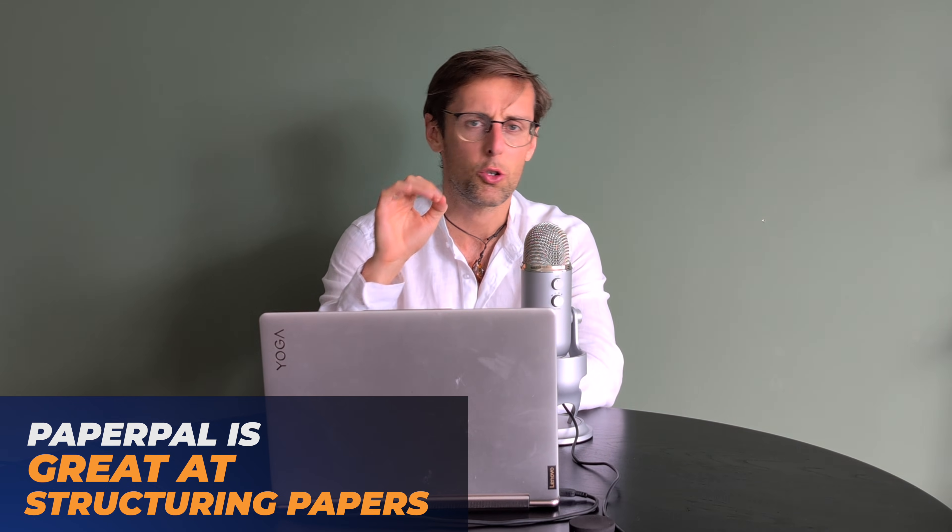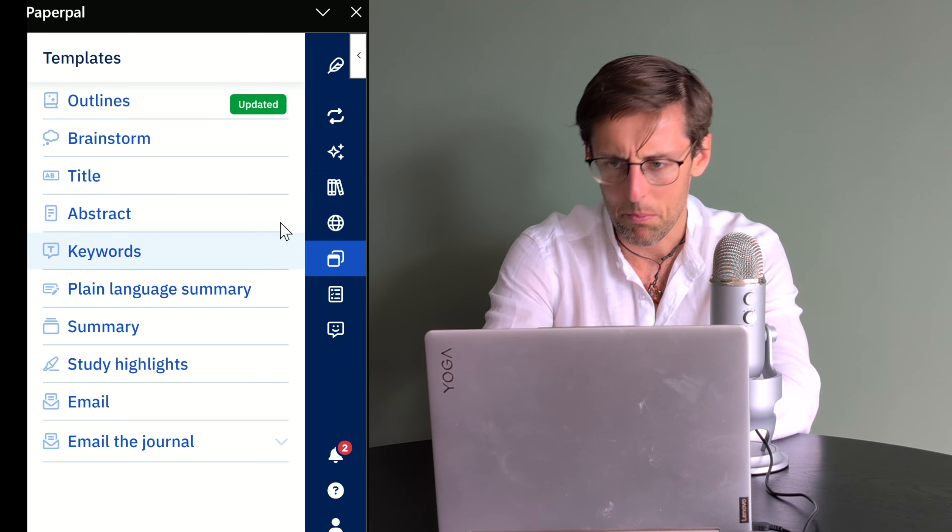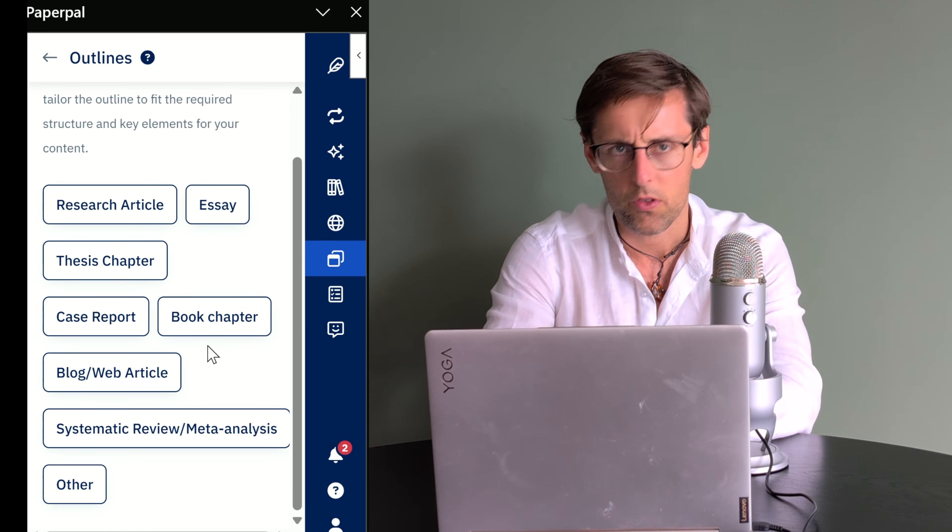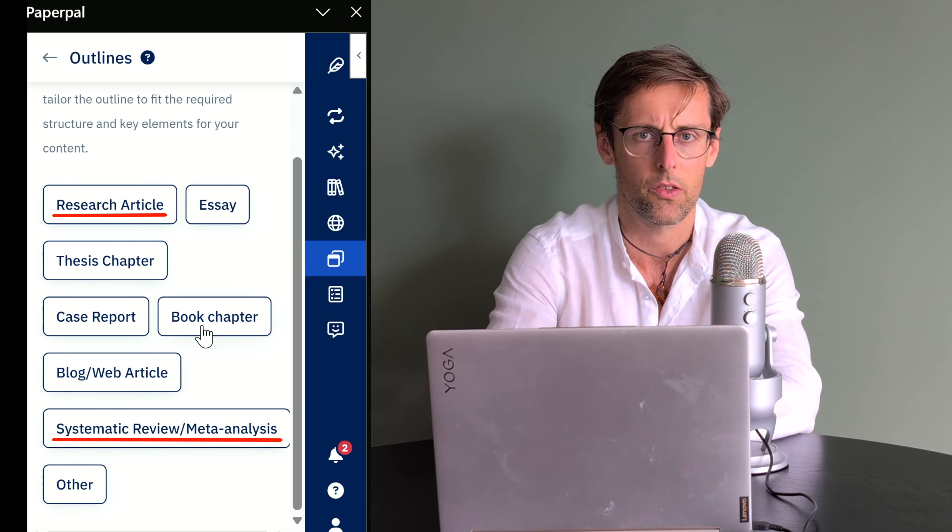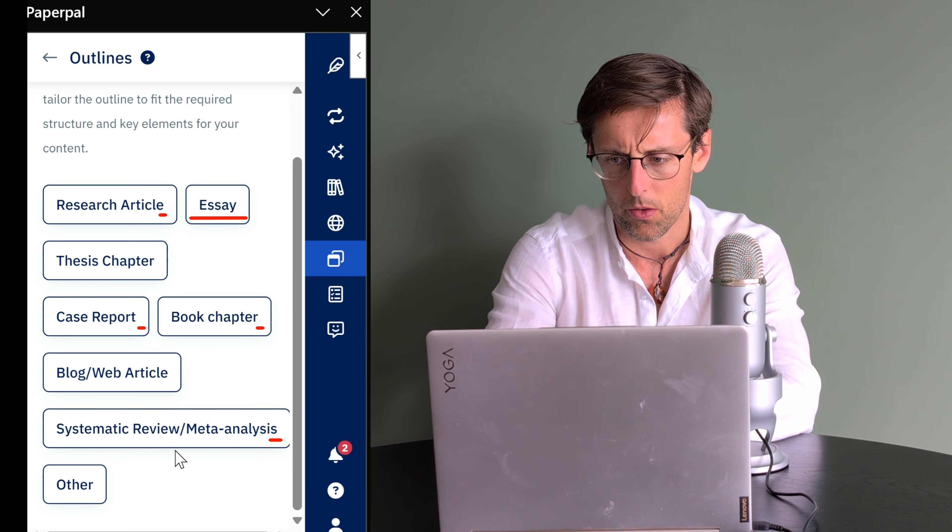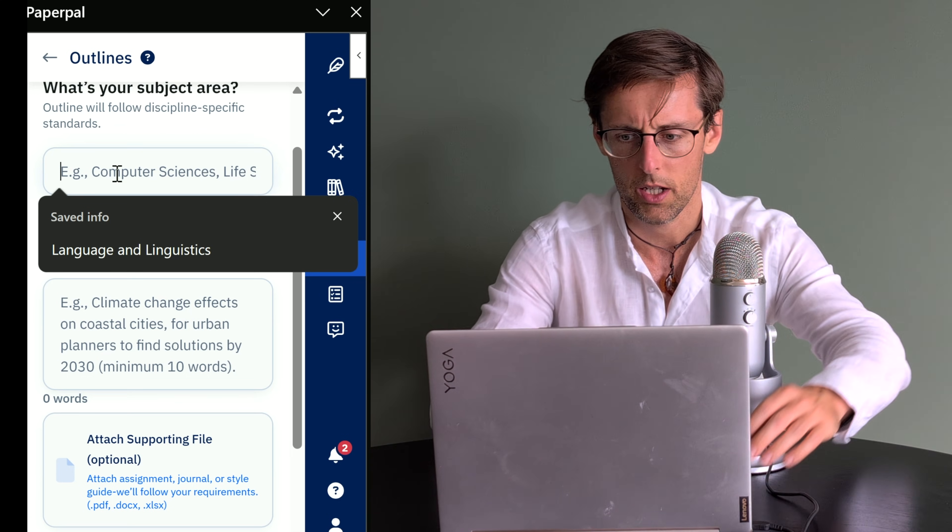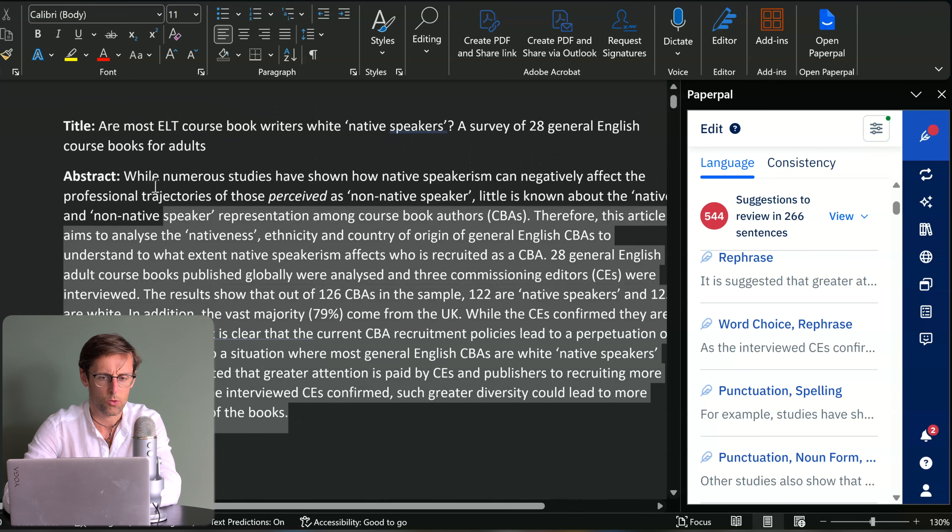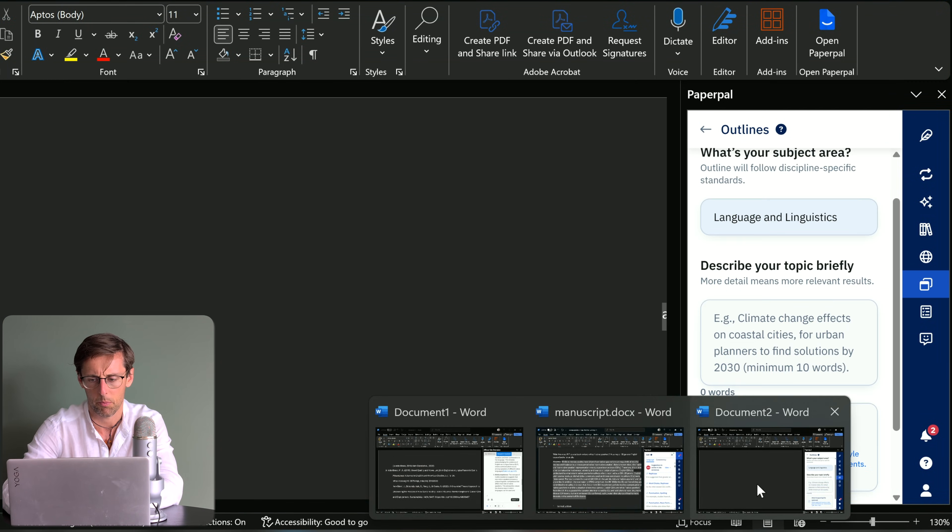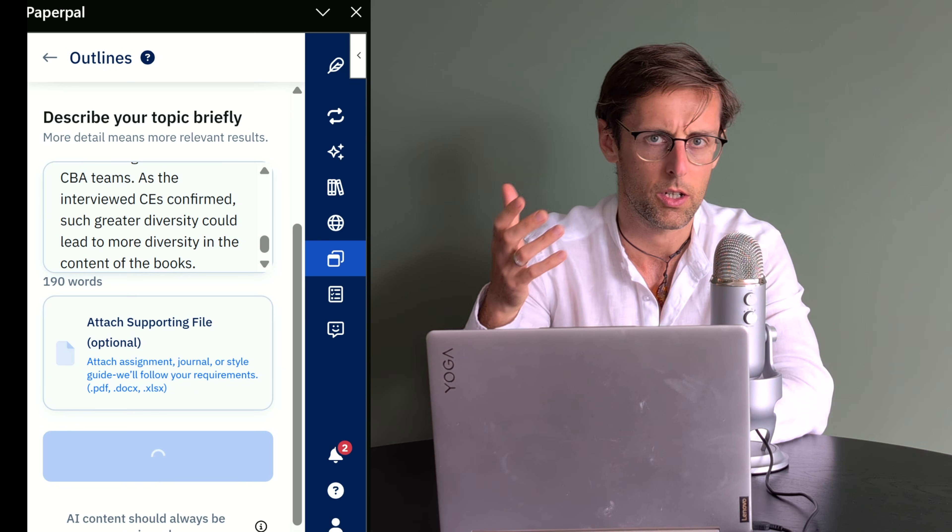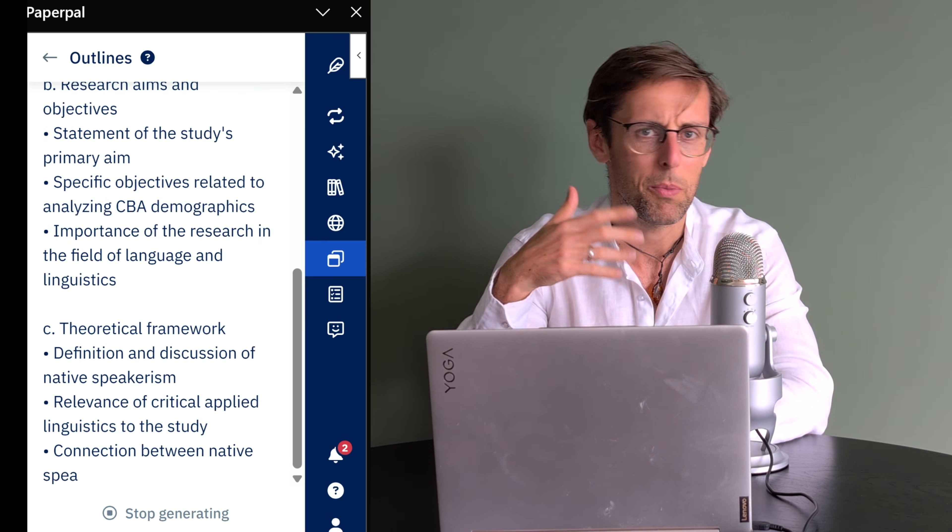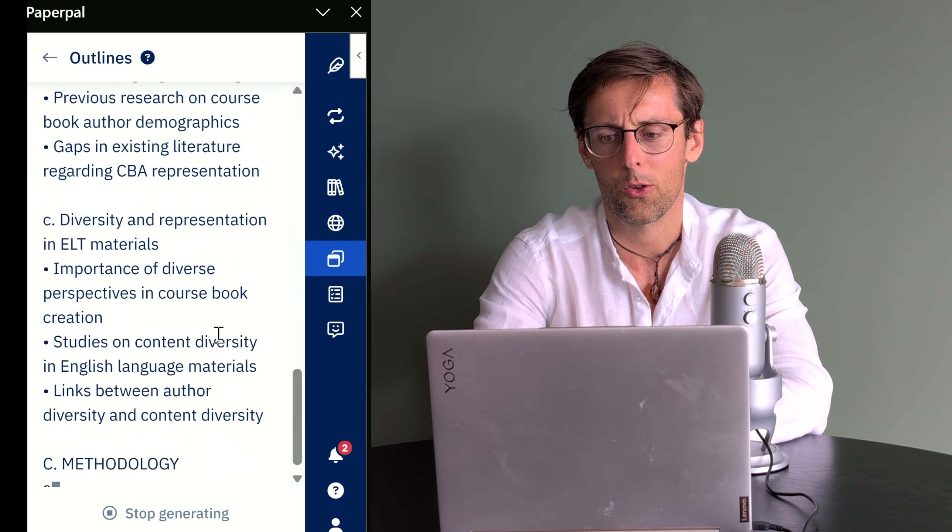What Paperpal is also really good at is helping you to structure your paper. Now previously you could only structure very limited number of papers in three or four limited fields but now if we go to the templates section and go to outlines there are numerous outlines for numerous different types of documents it can provide. There's a research article, there's a systematic review, a meta-analysis, a book chapter, case report, an essay and so on. So in here we're going to put in research article, put in our field, language and linguistics, put in the description. So what I'm going to do here is I already have the abstract so I'm just going to give Paperpal the abstract from my study, put it here and get it to generate an outline for me. So the more accurate that description is that you give to Paperpal, the better the outline is going to be. And in the past that outline was very very generic but now Paperpal has gotten so good at it.